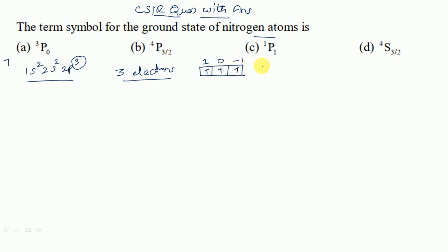Here, small l values are 1, 0, and minus 1. So capital L is 1 plus 0 minus 1, which means capital L equals 0. Because 1 minus 1 cancel, so remaining 0. L equals 0.